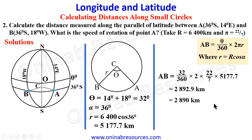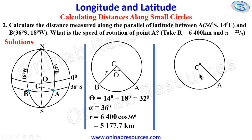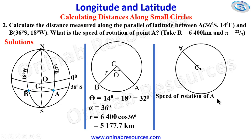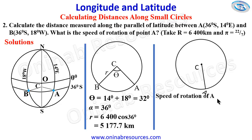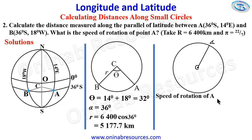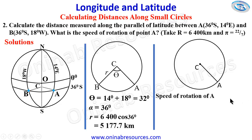Inputting this into the calculator gives 2892.9 kilometers, which to three significant figures is 2890 kilometers. We have done justice to the first part of the problem. We now go ahead to calculate the speed of rotation of point A. As the Earth rotates, point A rotates along with it within 24 hours. To calculate the speed of rotation of point A, we calculate the circumference of latitude 36 degrees south and divide by 24.